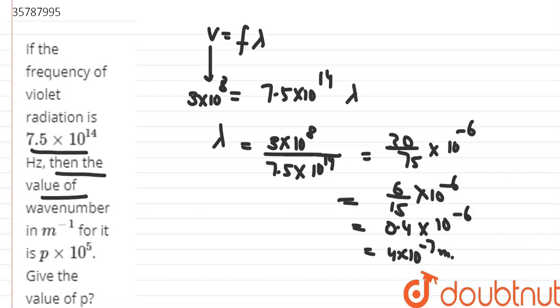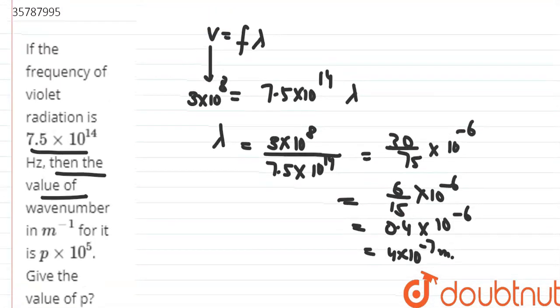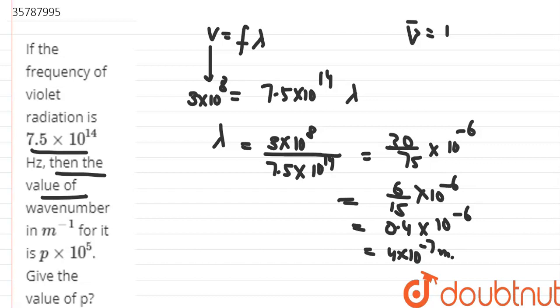Now we need to find the wave number. Wave number equals 1 divided by lambda.